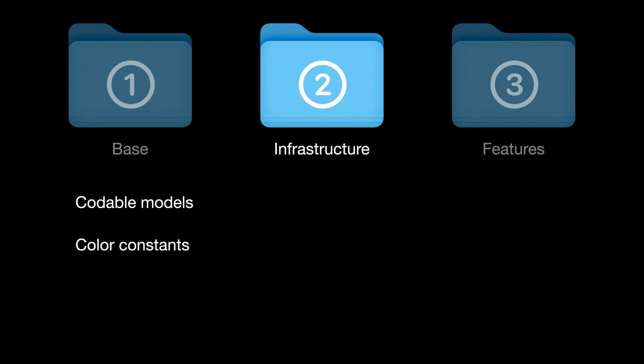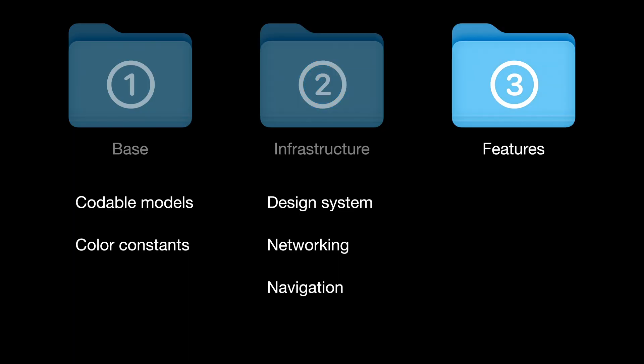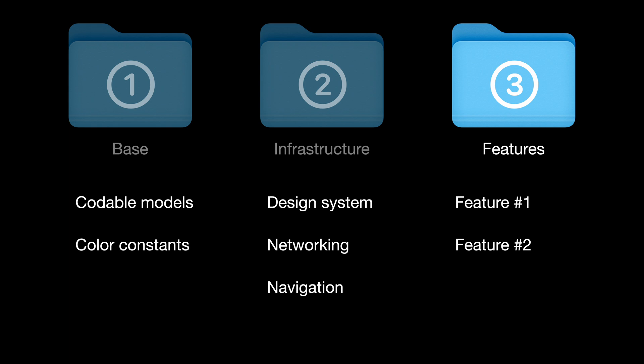The next level is infrastructure. Here we can have packages that depend on base packages, like design system components, networking, and navigation. In the case of networking, for example, we need access to the models, but other packages depending on models don't need the full networking implementation. Finally, the last level is feature packages. Here we can have full features of our app contained in a single package — not every type needs to be public, just the elements that the client apps require. These packages may also require global information like singletons that need to be injected, such as information about the current user.